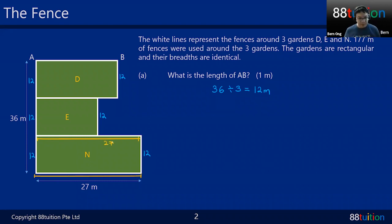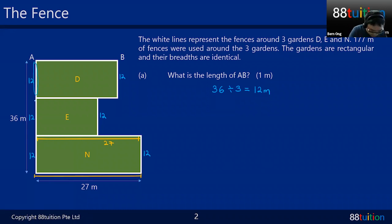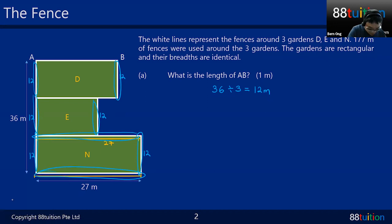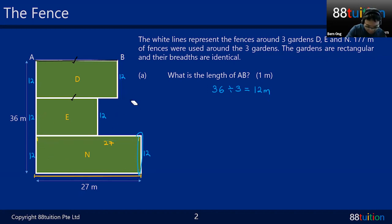Now, 177 represents all the white fence lines. I have 12, 12, 12, 27, 12, 27, 12, 12, 12 — that accounts for most of them. What remains are two unknown portions — let's call them black — and they are of equal length. So I'll take 177, minus everything known, then divide by two.